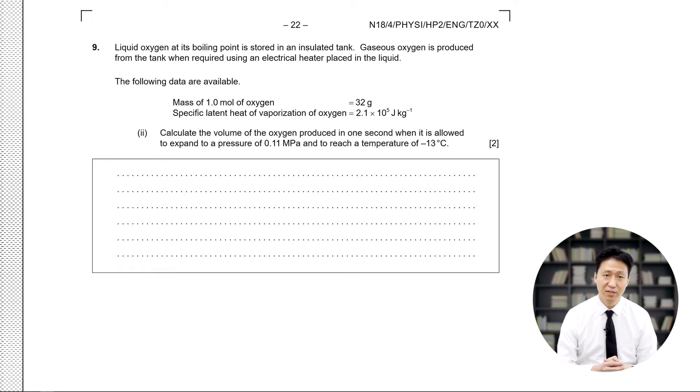Next, part 2 of this question says calculate the volume of the oxygen produced in one second when it is allowed to expand to a pressure of 0.11 MPa and reach a temperature of negative 13 degrees Celsius. We start off by calculating the temperature in degrees Kelvin, which is 260 degrees Kelvin. We will use the PV equals NRT equation. Solving for volume gives us volume is equal to NRT divided by P, the pressure.